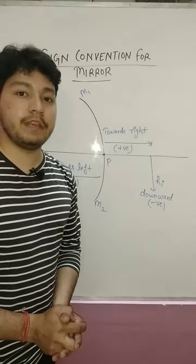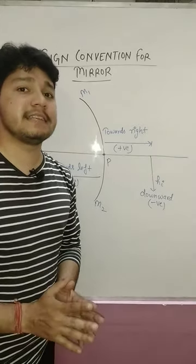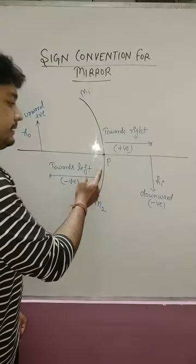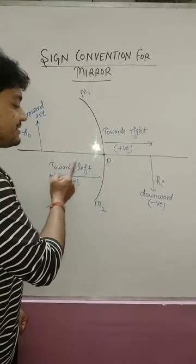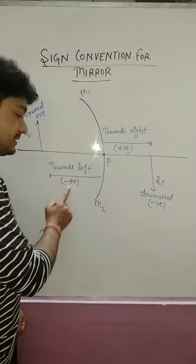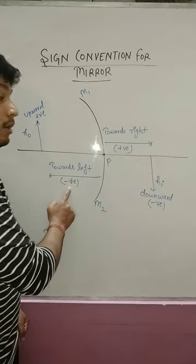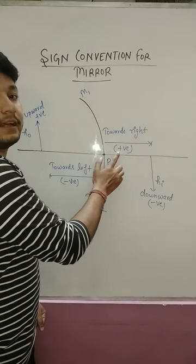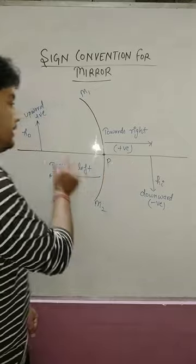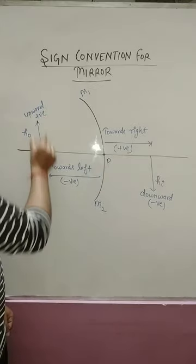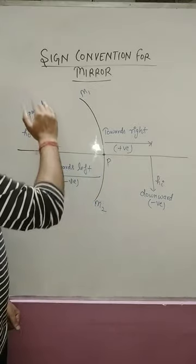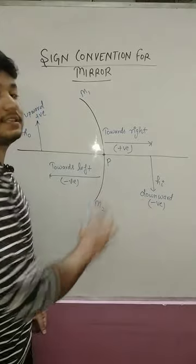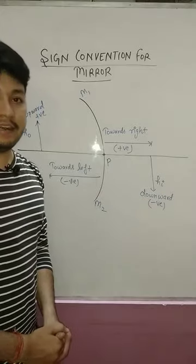In the sign convention of mirrors, all distances are measured from the pole. Distance towards the left side of the pole is taken as negative, whereas towards the right side of the pole is taken as positive. Distance above the principal axis is taken as positive, and below the principal axis is taken as negative.